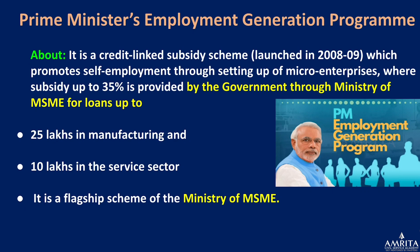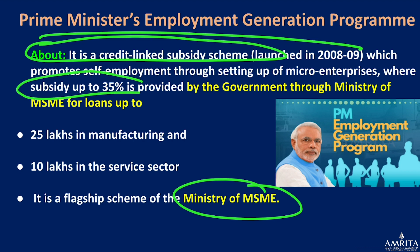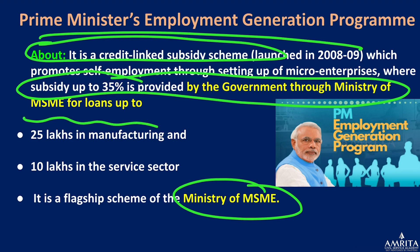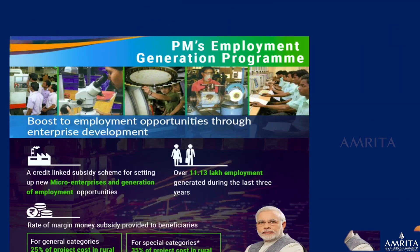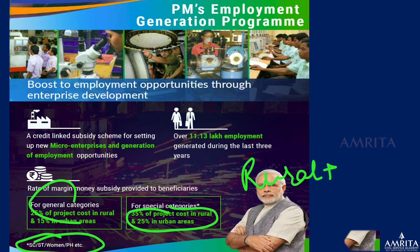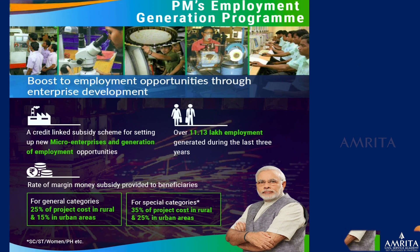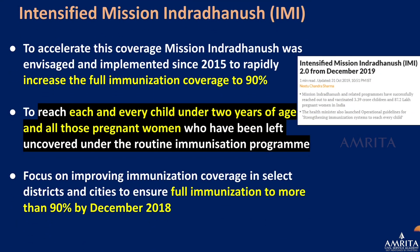The Pradhan Mantri Employment Generation Program is a credit-linked subsidy scheme by the Ministry of MSME. It provides subsidies of up to 35% of the project cost in rural areas for special categories (SC/ST, women, and physically handicapped), 25% for general categories in rural areas, and 15% in urban areas.